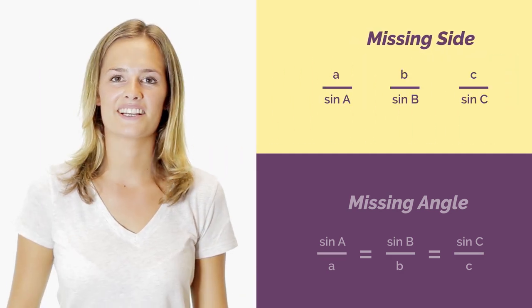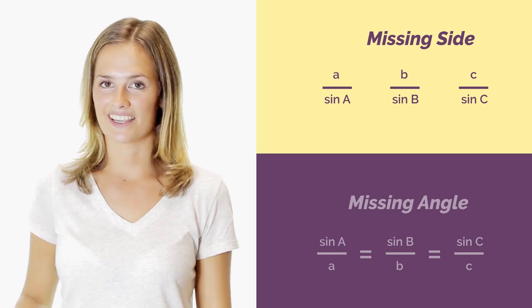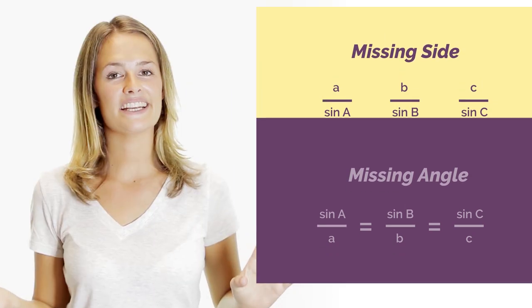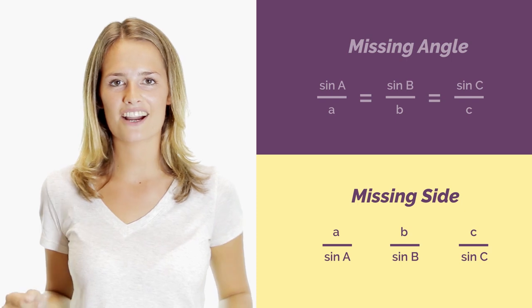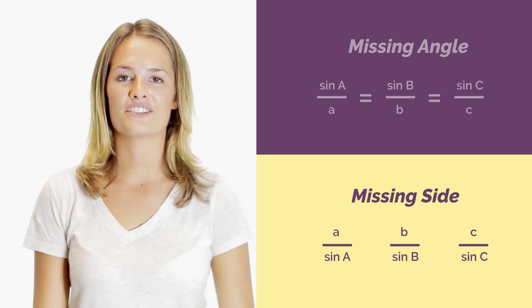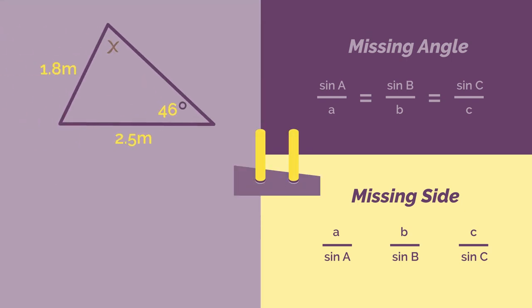So let's now have a look at an example where we're trying to find a missing angle. We need to use this version of the sine rule, the missing angle version. Give this one a go yourself. Pause the video, work out the answer, and click play when you're ready to check.